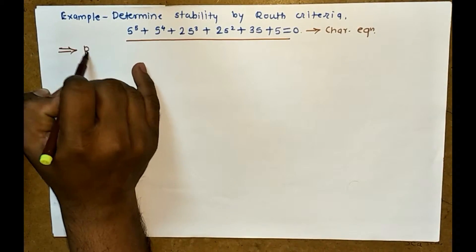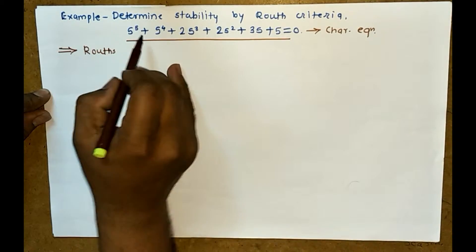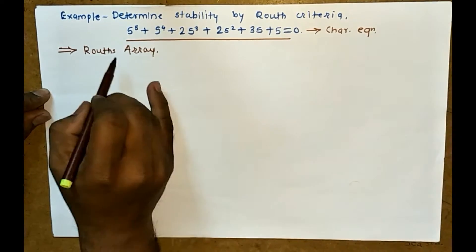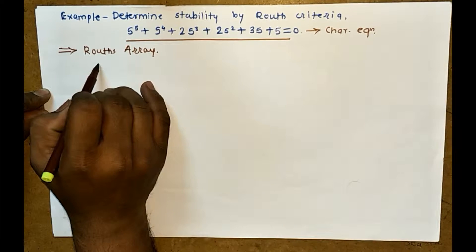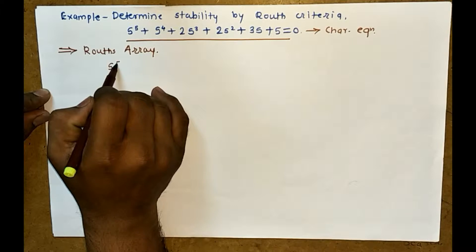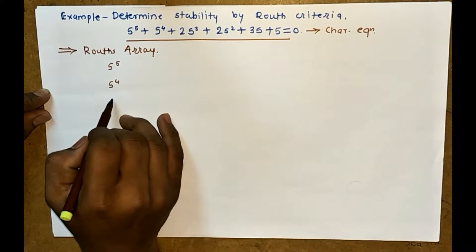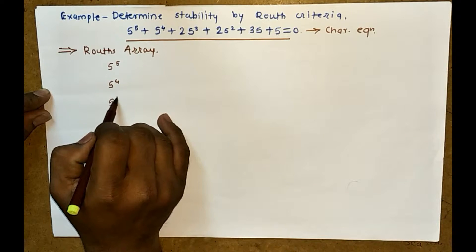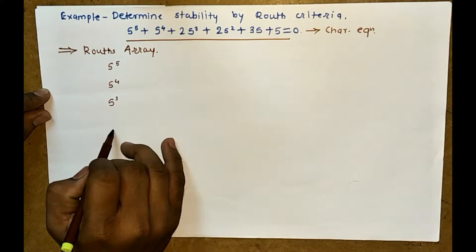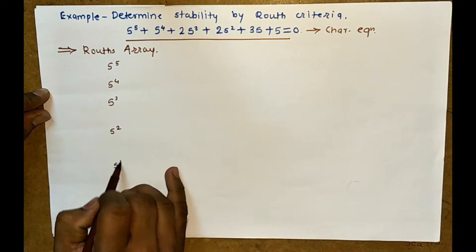So first of all, draw the Routh array. We have s to the power 5, s to the power 4, s to the power 3, s to the power 2, s to the power 1, and s to the power 0.